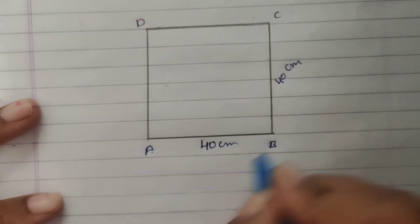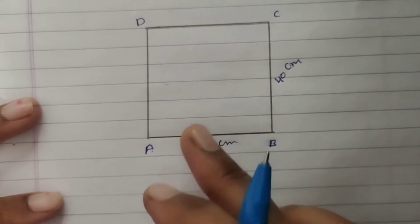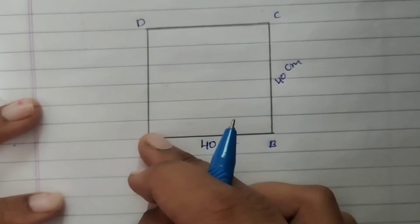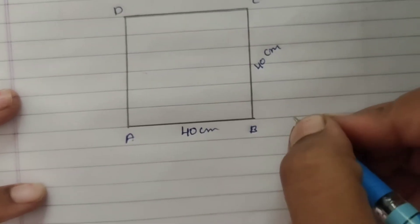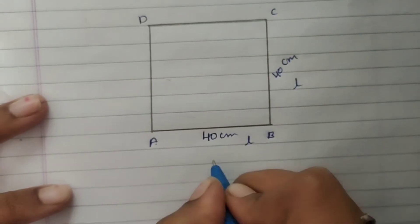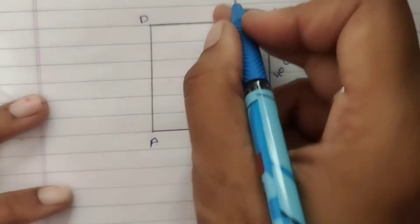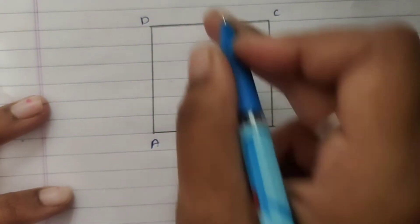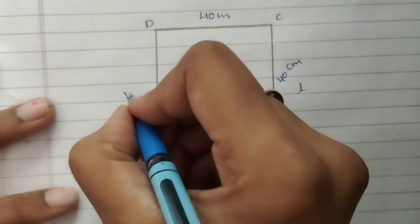The square has vertices A, B, C, D. Each side is 40 cm. All four sides — AB, BC, CD, and DA — are equal at 40 cm. So BC and CD are also equal to 40 cm.